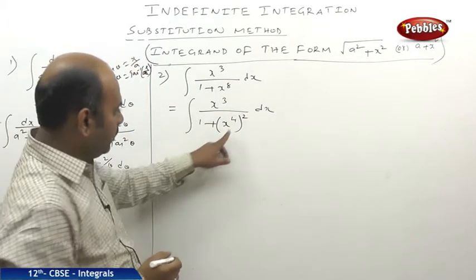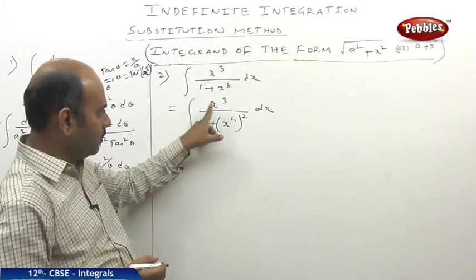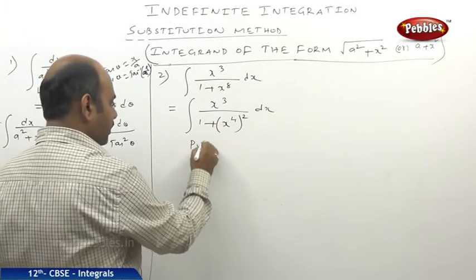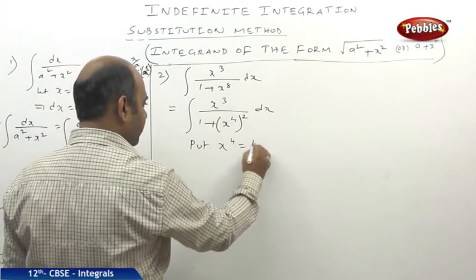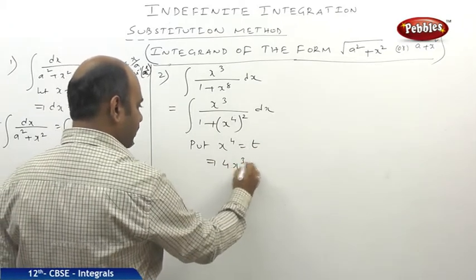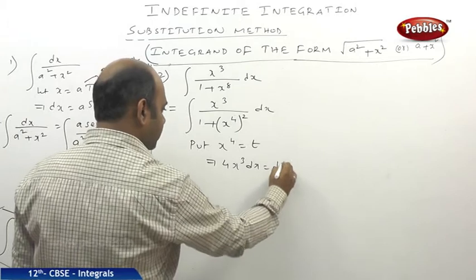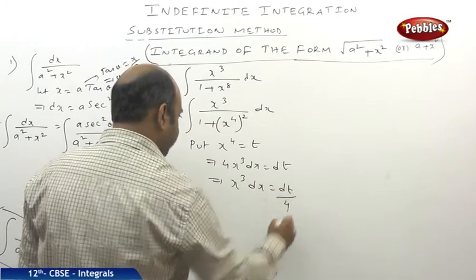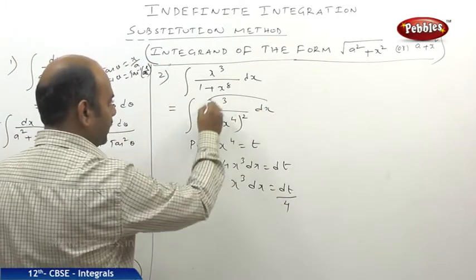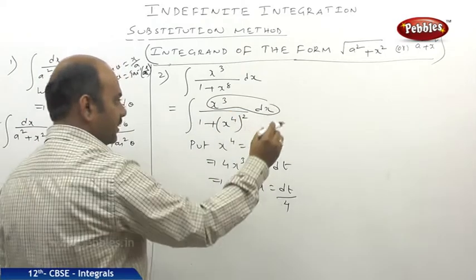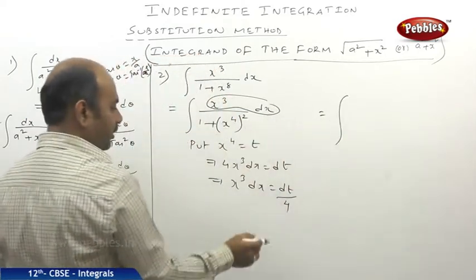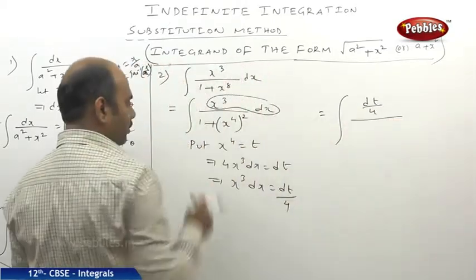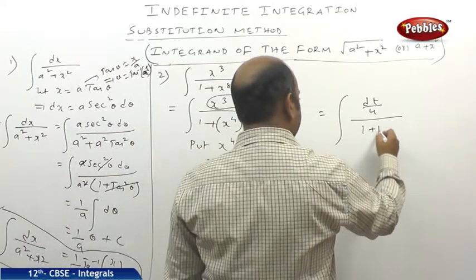Put x⁴ equal to t, then 4x³ dx equals dt, so x³ dx equals dt/4. The numerator becomes dt/4 and the denominator becomes 1 plus t².